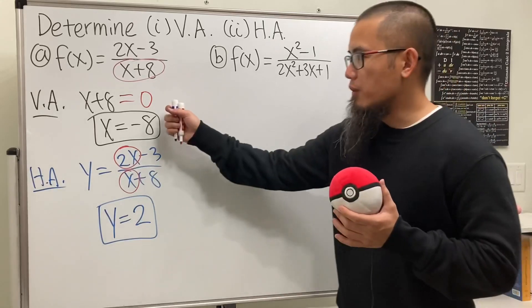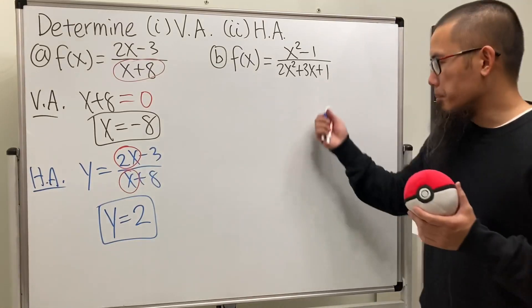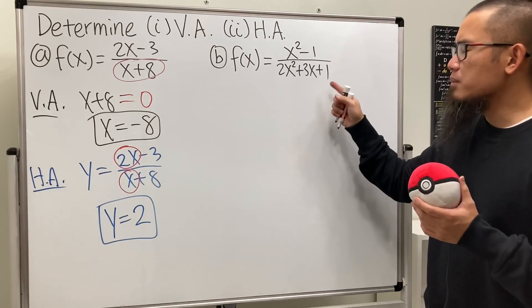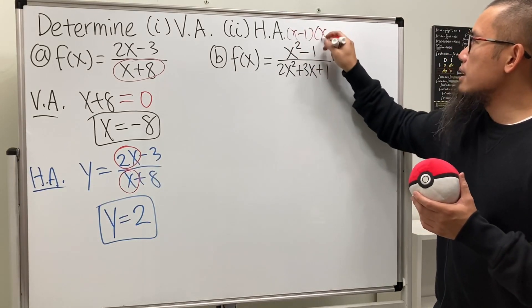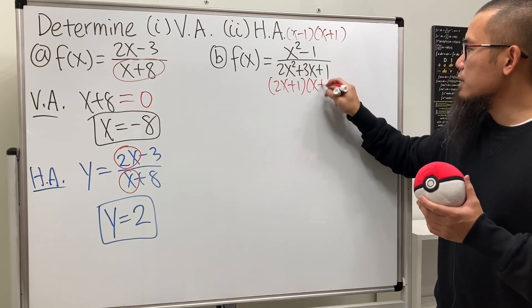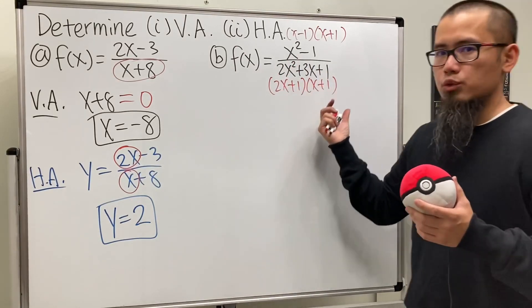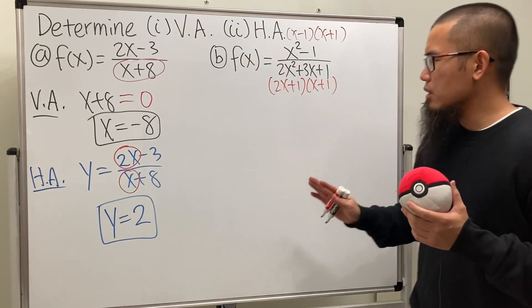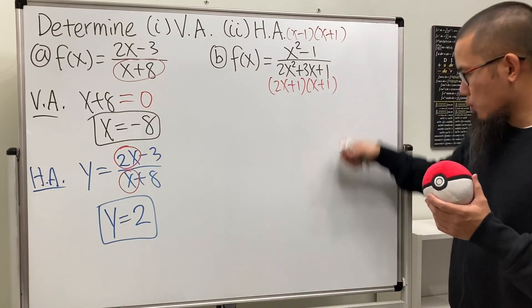For the vertical asymptote you must do it after you reduce the rational function. In part (b), we have x² − 1 on top and can factor and cancel. On top we get (x − 1)(x + 1); on the bottom we get (2x + 1)(x + 1). If you just set the denominator equal to zero right away, you'd think there are two vertical asymptotes — but that's not true, because x + 1 cancels.